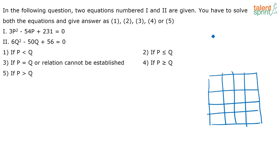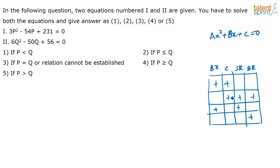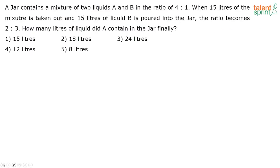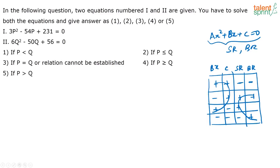If you have a quadratic equation ax² + bx + c = 0, you just have to remember this table. Draw a diagram like this with four columns, and put plus symbols in a certain pattern — wherever there is no plus, just put minus. If the sign before bx is positive and the sign before c is positive, then both roots of the equation are going to be negative.